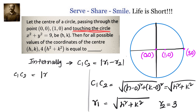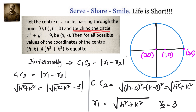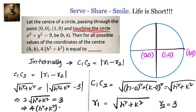Using the internal tangency formula: c1c2 = |r1 − r2|, and substituting the values, we get √(h² + k²) = |√(h² + k²) − 3|. Opening the absolute value, we get 2√(h² + k²) = 3, because √(h² + k²) = 3 − √(h² + k²). Squaring both sides gives 4(h² + k²) = 9. Therefore, the locus is 4(h² + k²) = 9.